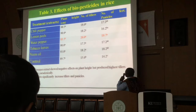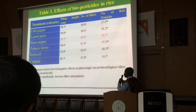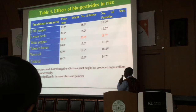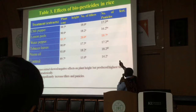When we compared the effects of the plant extracts on rice growth, we noted that the plot treated with water pepper produced shorter plants. As we know, very tall plants are not ideal because they can easily lodge. Paradoxically, these shorter plants produced the highest number of tillers and the highest number of panicles compared to all other pesticides tested.